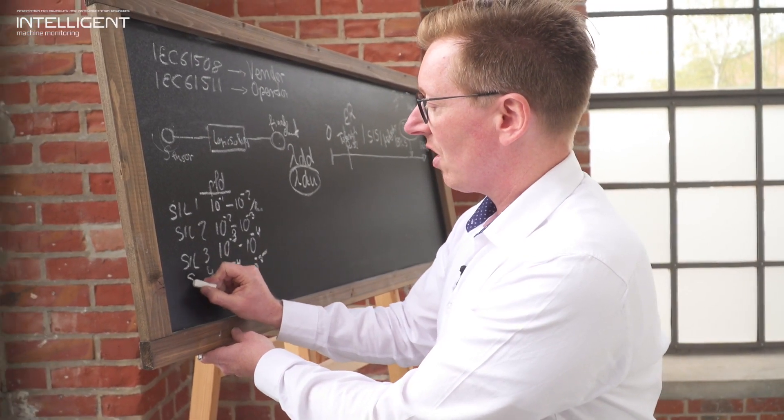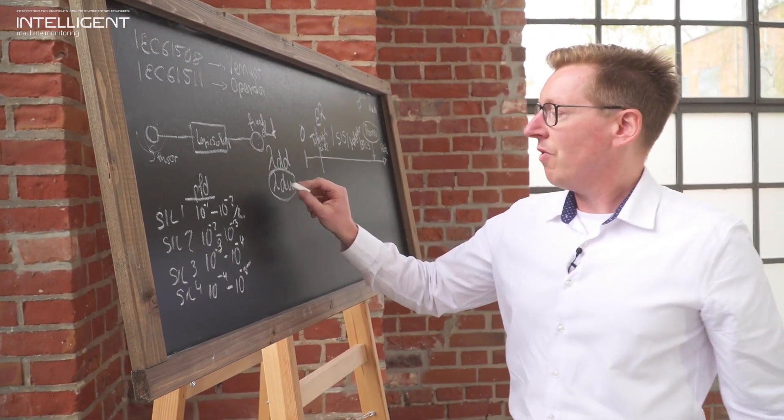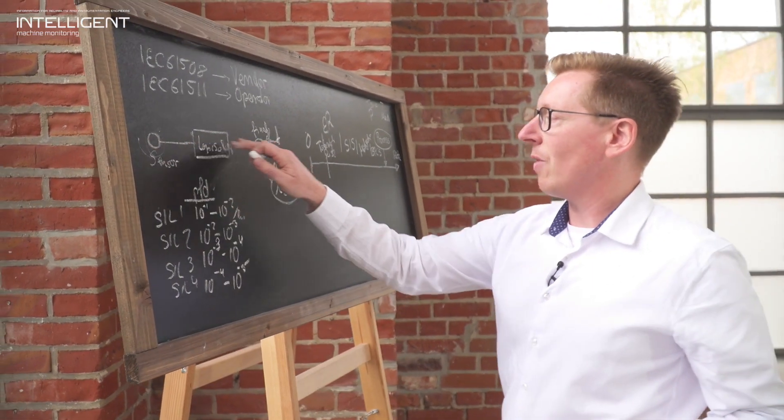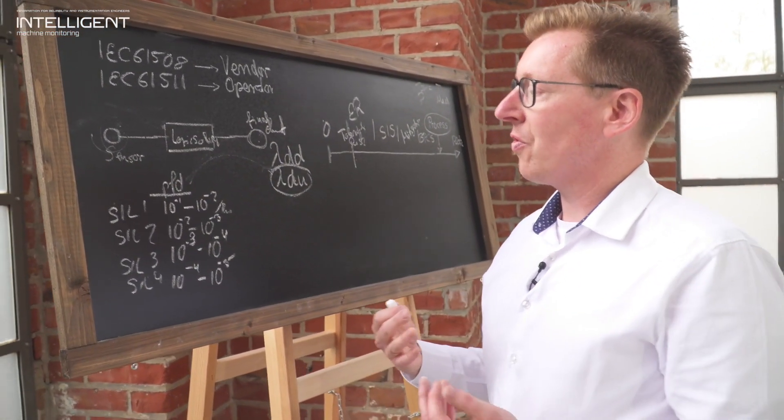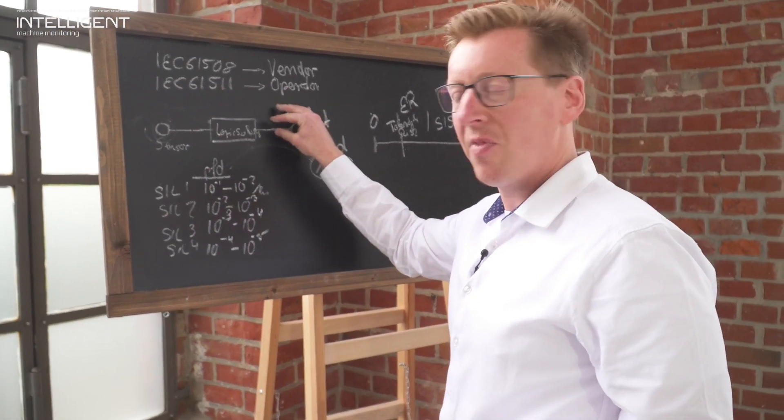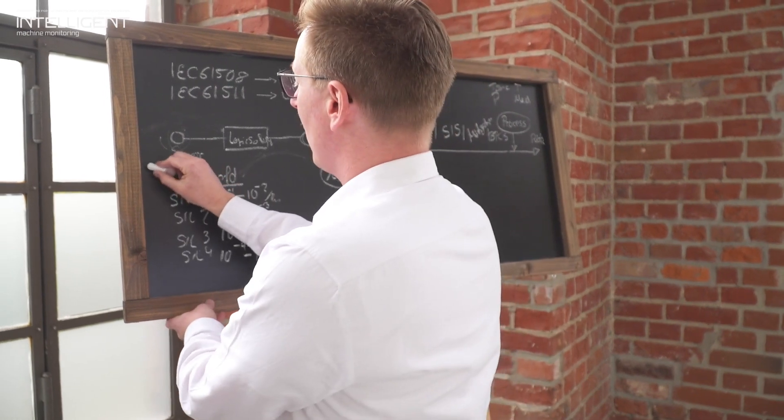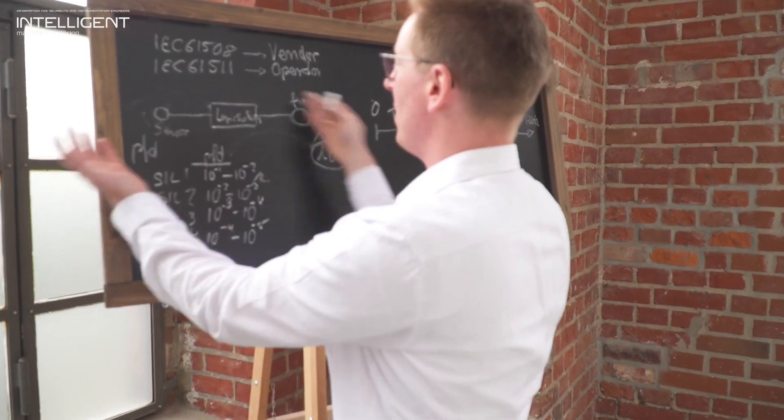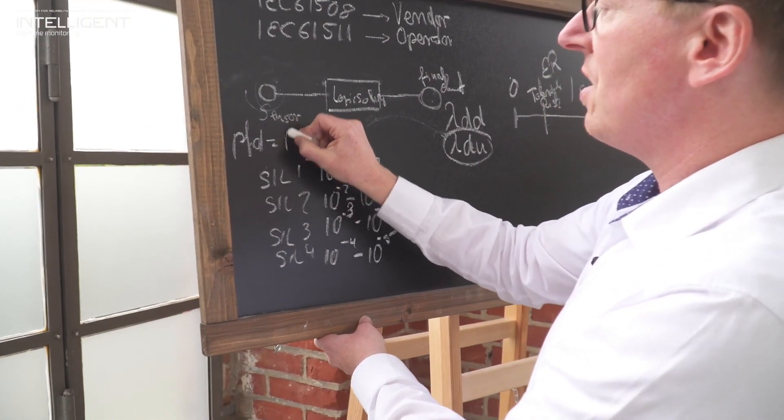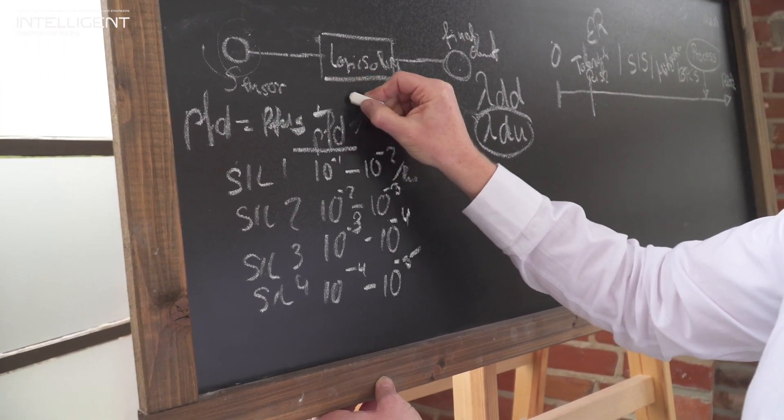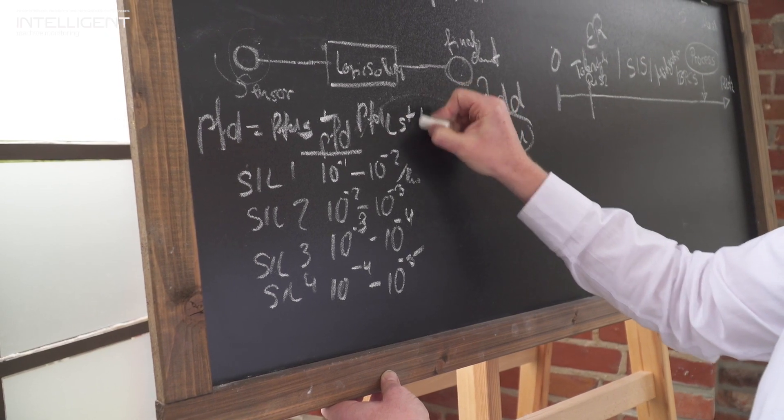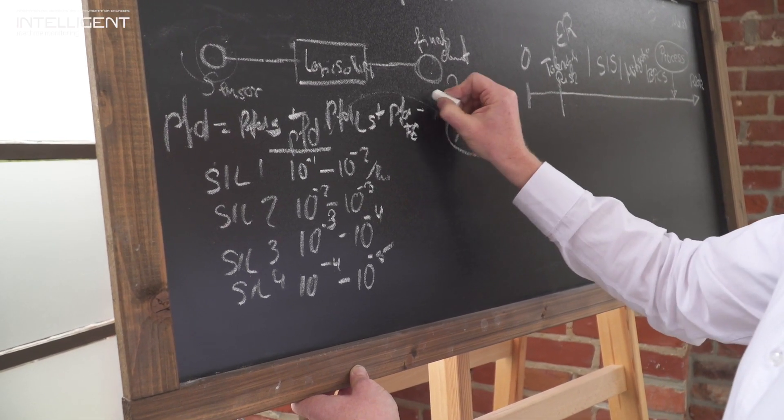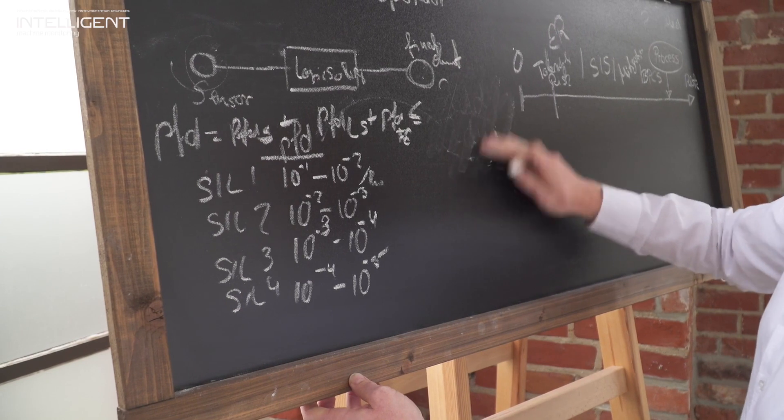And this lambda DU value is the one driving this PFD value. When you do the evaluation of your SIS system, it is not sufficient that, for example, you require a SIL 2 system. When you have a SIL 2 requirement, you have to calculate the PFD of the entire chain of command, the entire PFD across the system. So that includes the PFD of the sensor, plus the PFD value of the logic solver, plus the PFD of the final element. And this needs to be below your SIL requirement.